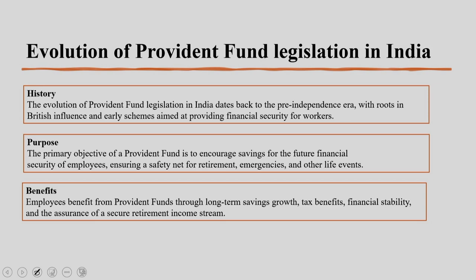The history says that the evolution of provident fund legislation in India dates back to the pre-independence era. As already mentioned, around the 1920s, it started with roots in British influence and early schemes aimed at providing financial security for workers. The objective of a provident fund is to encourage saving for the future financial security of employees, ensuring a safety net for retirement, emergencies and other life events.